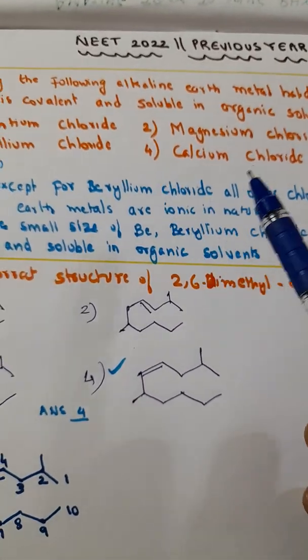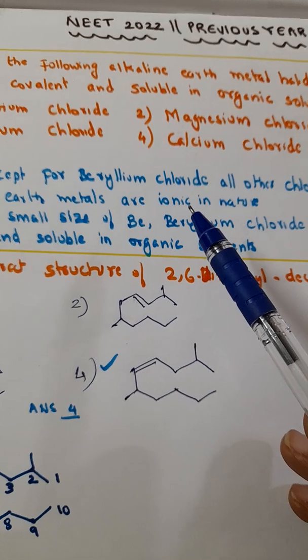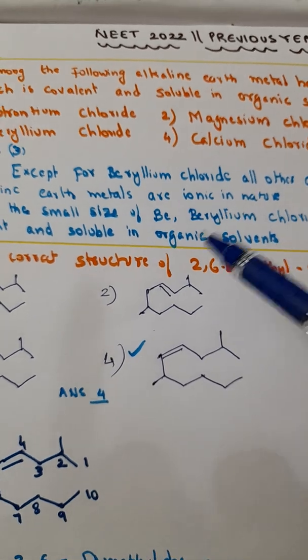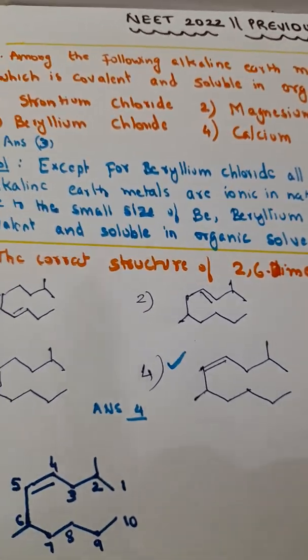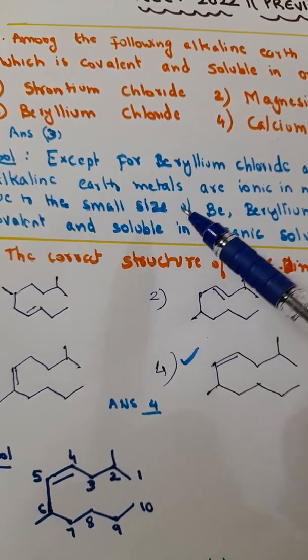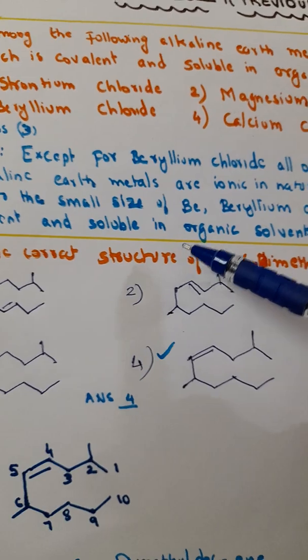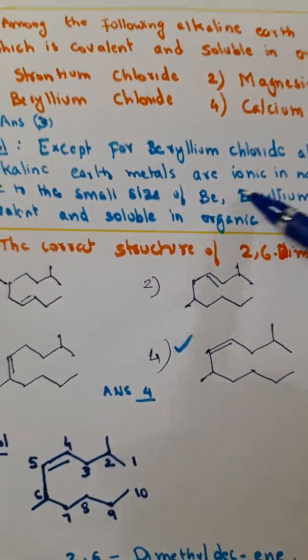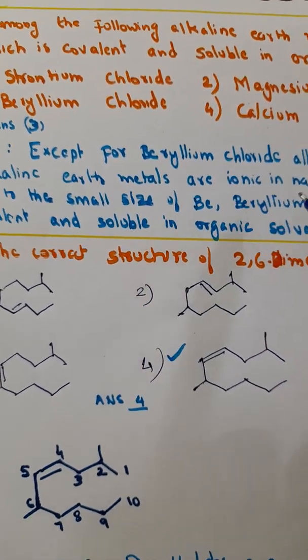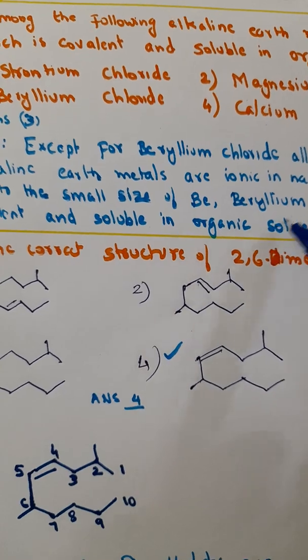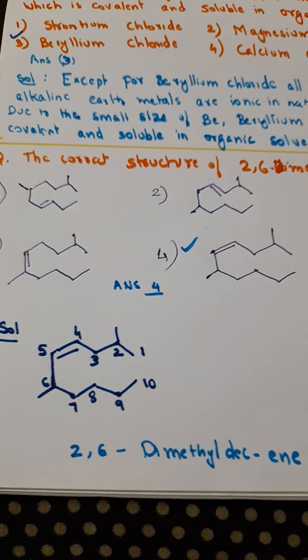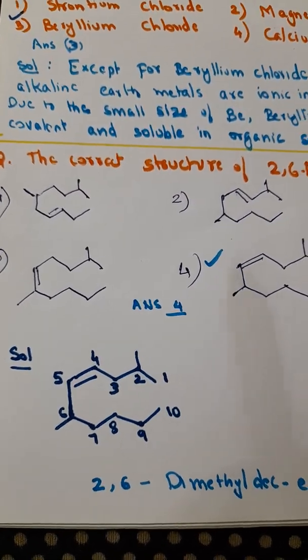From such small points which are given in the concepts from the lesson, you can get such questions. When you read the lesson alone, you would not know what type of questions are going to come from this. Only if you practice such questions, you know based upon the property of beryllium that it is small and covalent. That is how they are asking whether it is soluble in organic solvents. Just to make you confused, these questions are asked for the exam.